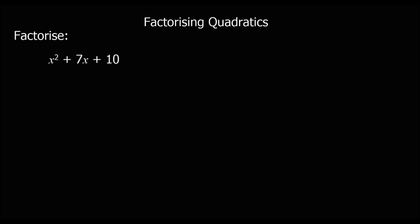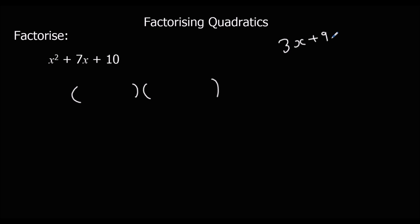This question says factorise. Factorise means put into brackets. This question has got three terms, and usually when you've got three terms, that's double brackets. Three terms doesn't always mean two sets of brackets, and two terms usually means one bracket, but there are exceptions. So usually when you've got three terms, you've got two sets of brackets.